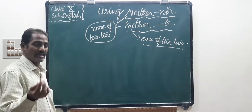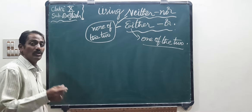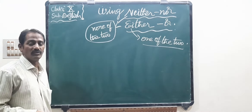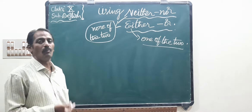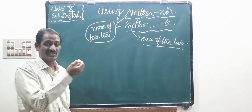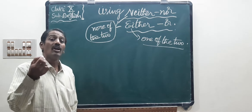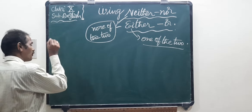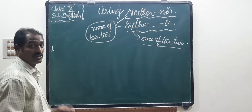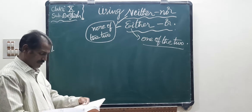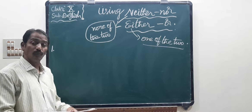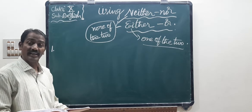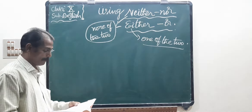See children, we have some examples. First, neither/nor. Now, in your first unit, page number 64, see children, exercise one.